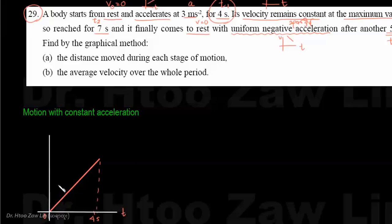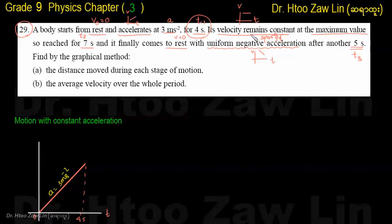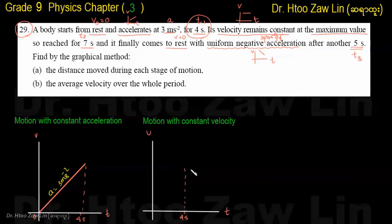The first step: acceleration a is equal to 3 meters per second squared. The velocity remains constant during the middle phase. The distance between positions is constant when velocity is constant.